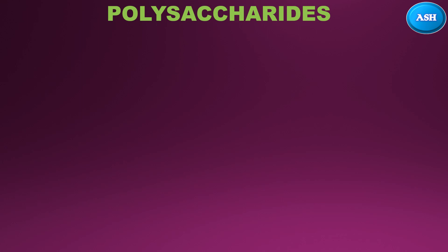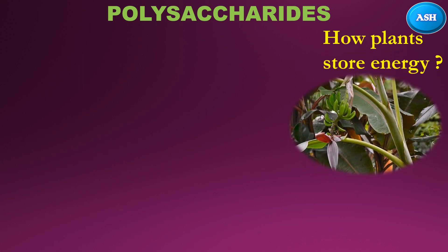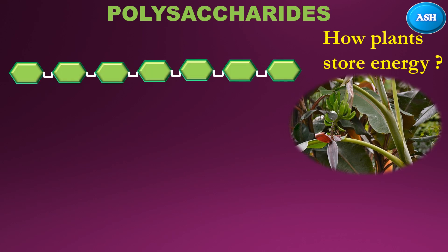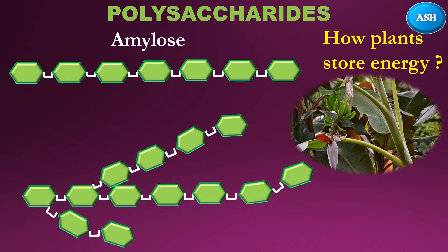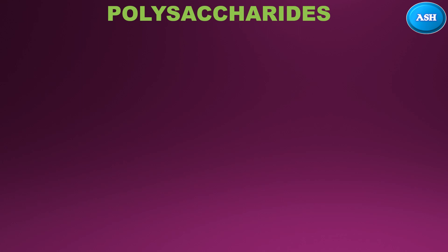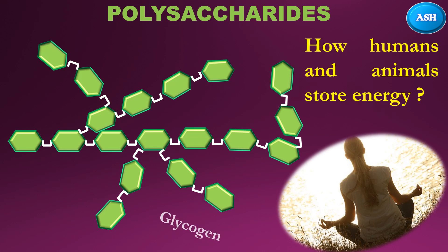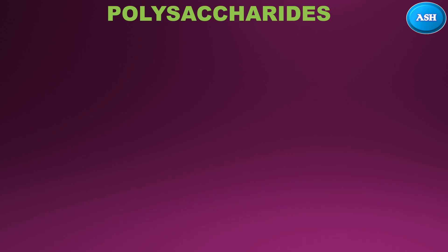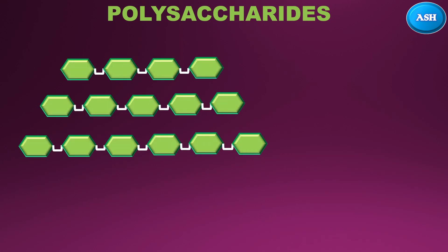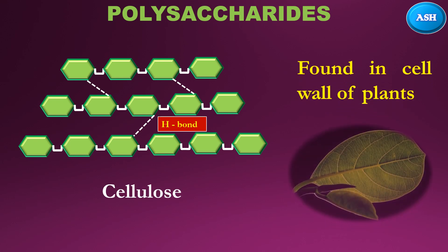The last type of carbohydrate is polysaccharides. Have you ever thought about how plants store energy? The straight chain of glucose is known as amylose, and glucose can also be in a branched chain known as amylopectin. So plants store energy in the form of amylose and amylopectin. Humans and animals store energy in the form of a highly branched chain of glucose known as glycogen. When glucose chains are arranged horizontally and joined by hydrogen bonds, this forms cellulose, which is found in the cell wall of plants.